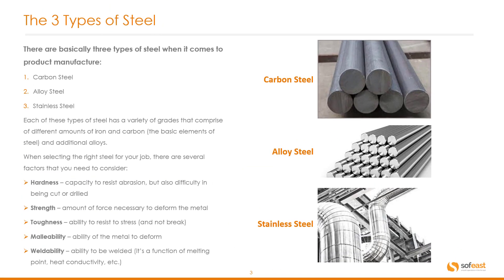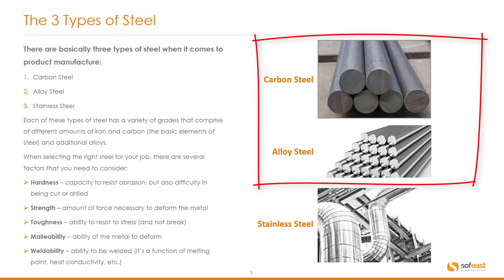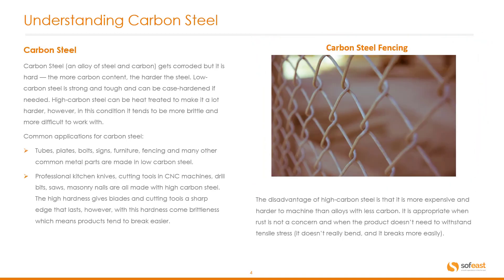On the right hand side here we're going to be focusing on the top two steels: carbon steel and alloy steel. Carbon steel, which is an alloy of steel and carbon, gets corroded but it is hard. The more carbon content, the harder the steel. Low carbon steel is strong and tough and can be case hardened if needed. High carbon steel can be heat treated to make it a lot harder; however, in this condition it tends to be more brittle and more difficult to work with.